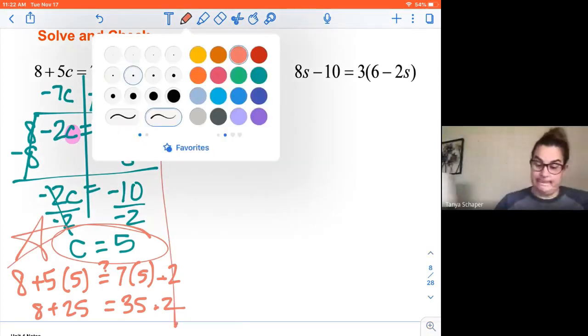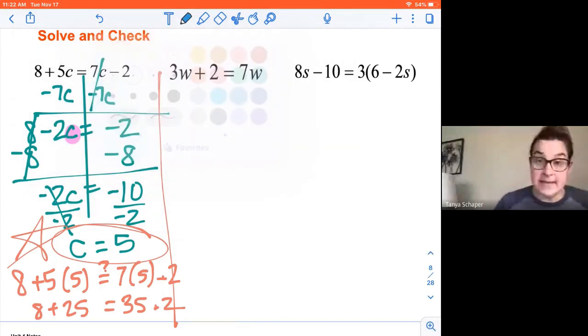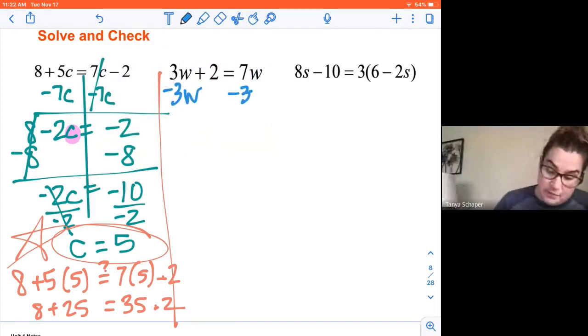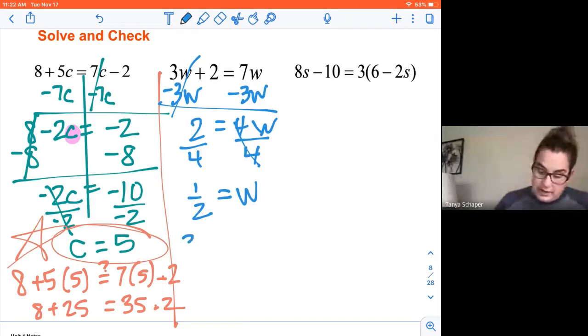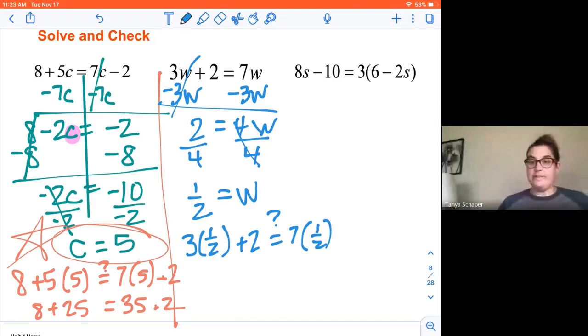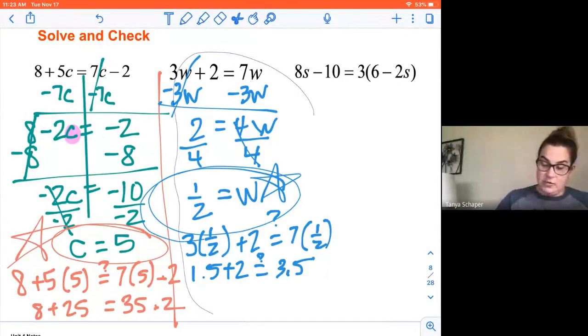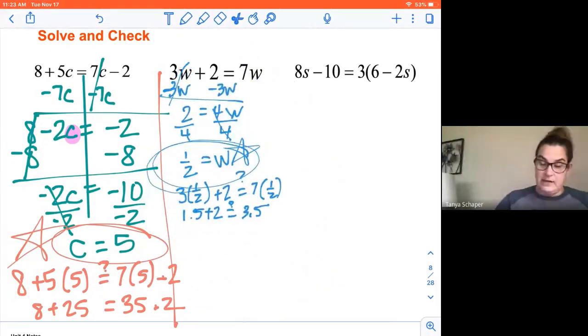So look at the next one. I have variables on both sides. I want to get them on the same side. I'm going to subtract 3w from both sides. Fortunately, I didn't have to do anything to simplify first. So I got my variables on one side now. Now I'm ready to go. I'm going to divide both sides by four. W equals one half. Now a common mistake here is people see two and four and they're like, oh, it's two. This is where the check comes in as being super helpful. So is 3 times one half plus 2 the same as 7 times one half? So is 1.5 plus 2 the same as 3.5? The answer is yes. And I have the correct answer.